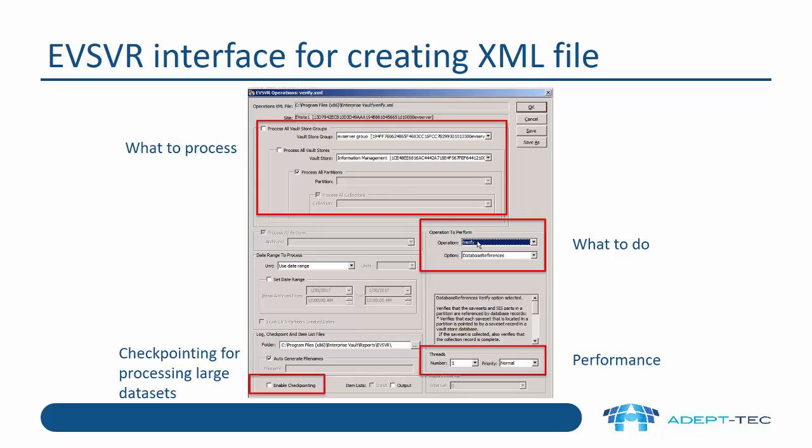Repair is quite a serious option — it can make changes to your SQL databases, so you need to be very careful before you run it. At the bottom, there are two important options, particularly if you're going to process a very large amount of data. Checkpointing will enable you to pause EVSVR, or if there's ever an issue, it will restart from where it left off. So if you are processing a very large data set, it's probably worth switching on checkpointing. You can also specify the number of threads — if everything in storage is broken and you want to process it as quickly as possible, I'd recommend increasing the number of threads from one to maybe one thread per CPU of your box.